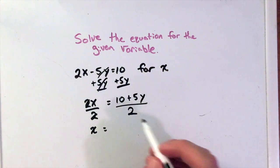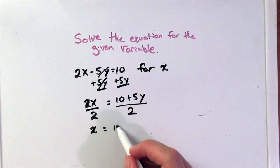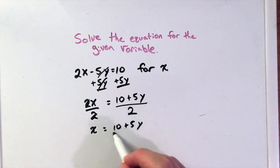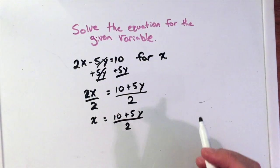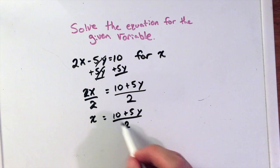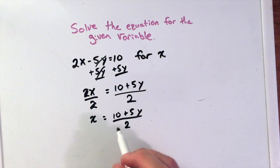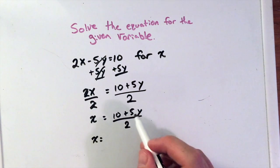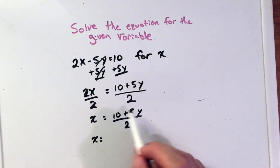Now we have x equals 10 plus 5y over 2. Now what we're allowed to do, if we want, is separate the 2 to both parts. We can divide both parts here by 2. Since the 2 is in the denominator and the plus sign is in the numerator, the two parts are separated. So I can write 10 over 2 plus 5 over 2y as such.